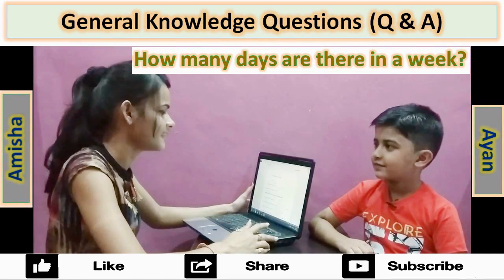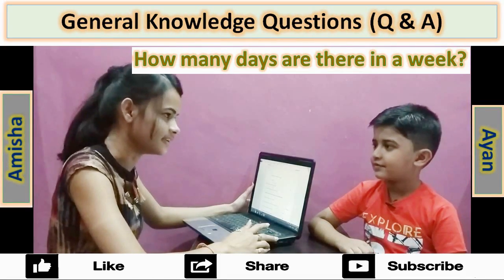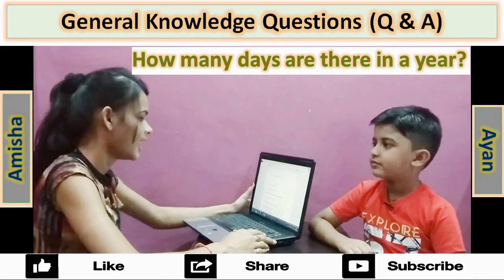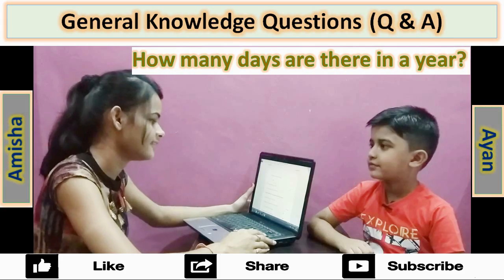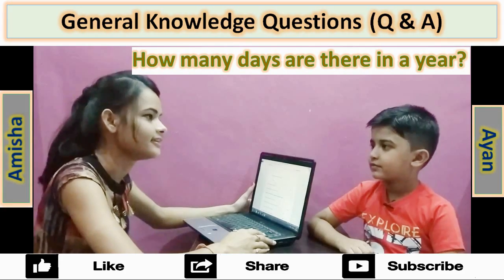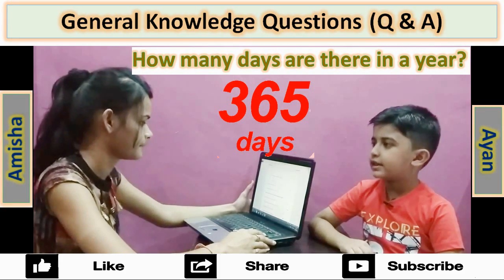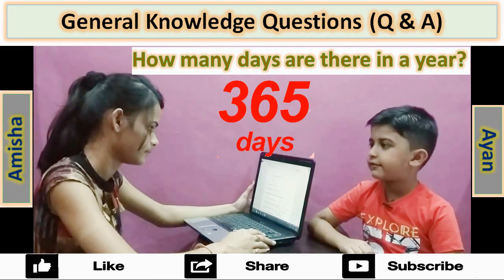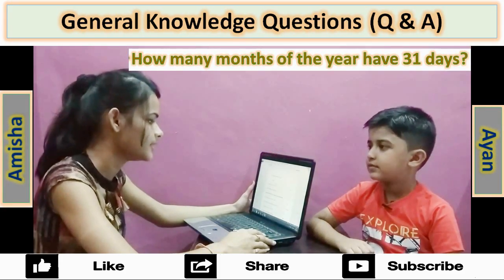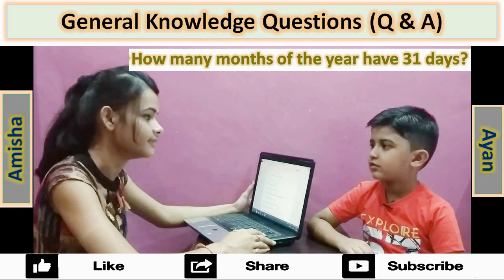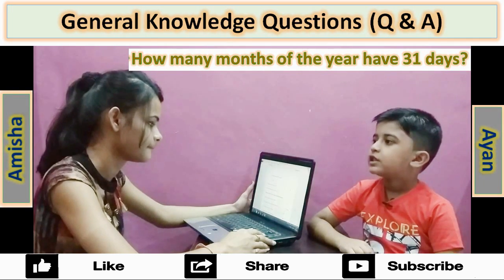How many days are there in a week? 7. How many days are there in a year? 365. How many months of the year have 31 days?